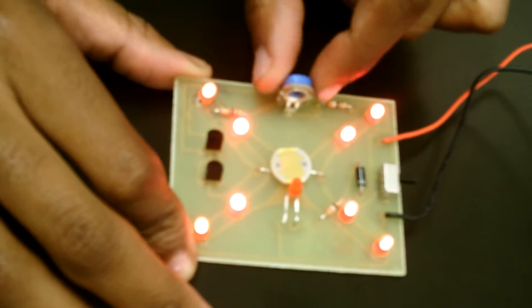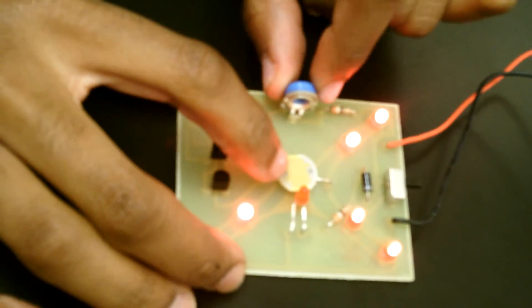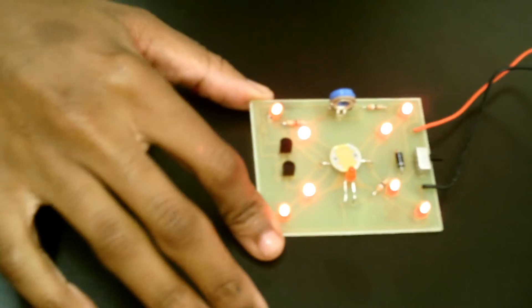However, if I turn it to the right, the resistance of my CDS cell is lowered, and therefore, less light is given off by these LEDs.